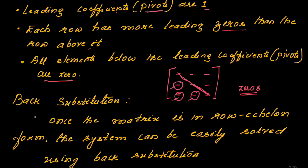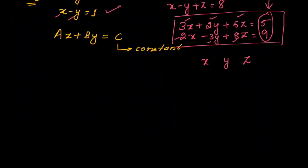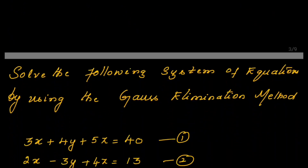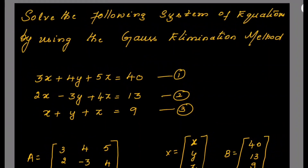The last step required to get the result is back substitution. Once the matrix is in row echelon form, the system can be easily solved using back substitution. Let us see one example so that things become clearer.